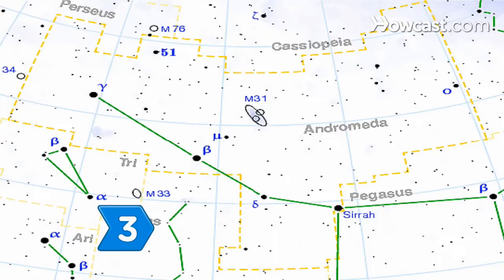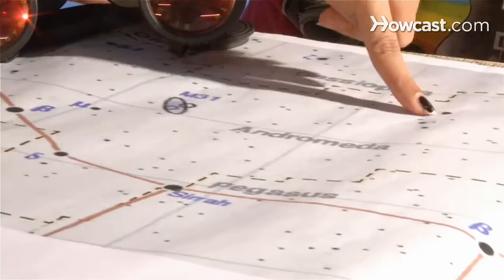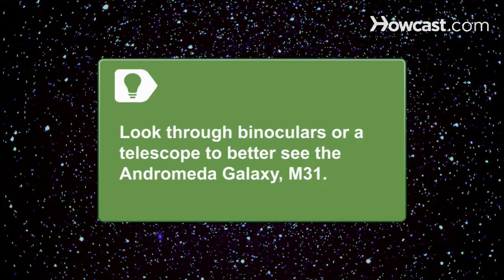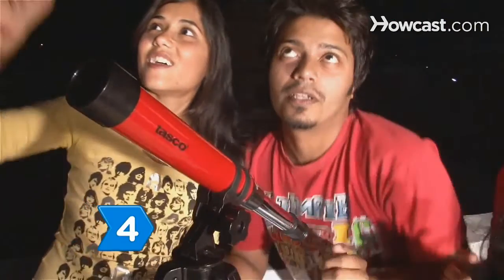Step 3. Locate the constellation Andromeda, daughter of Cepheus and Queen Cassiopeia, directly to the south of Cassiopeia. Look through your binoculars or telescope to get a better view of the Andromeda galaxy, called M31, which is the closest large galaxy to our Milky Way.